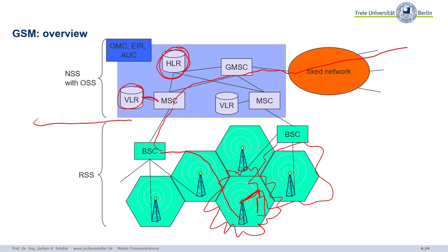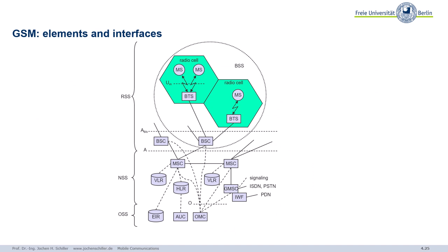So let's have a closer look inside those elements and the interfaces. Basically the same picture, but now you see the components and additionally some interfaces. Why is this important? For example, the Um interface — that's similar to the UK serial interface of ISDN phones — that's the U interface for mobile, and it specifies everything that goes over the air. We'll come back to this when we look at frames, multiplexing, modulation, coding, etc.